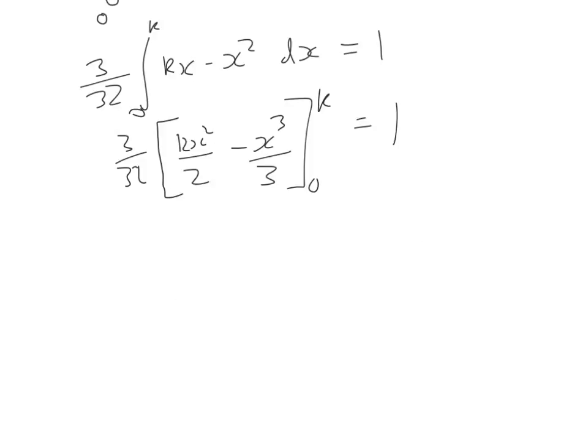Now if we substitute in our upper and our lower limits, we're going to have 3 over 32 outside of... substituting k into this, we will get k times k squared, which will give us k cubed over 2, minus k cubed over 3. And our lower limit, if we substitute 0 into both of these fractions, it will give us nothing, and all of that is equal to 1.